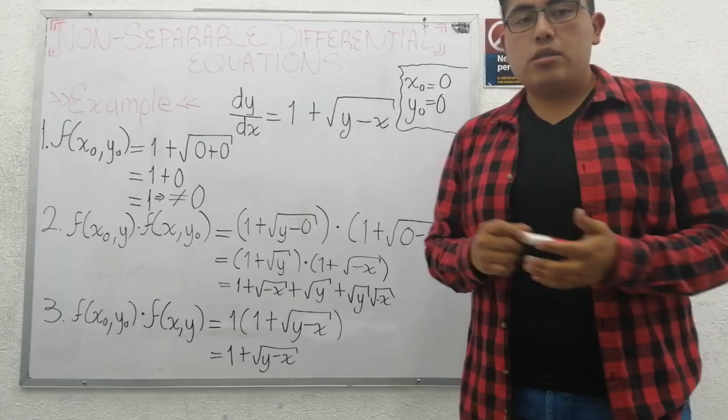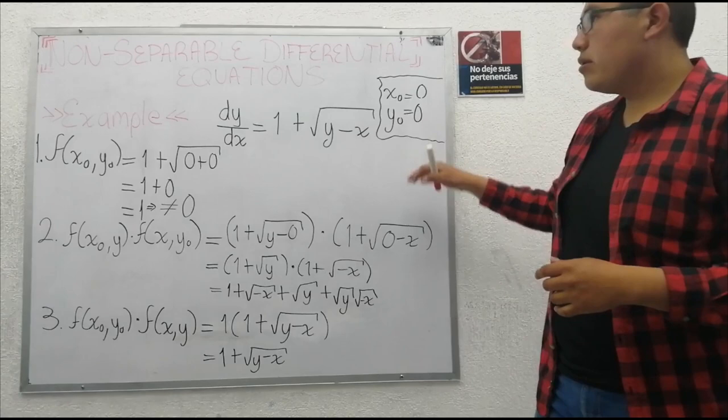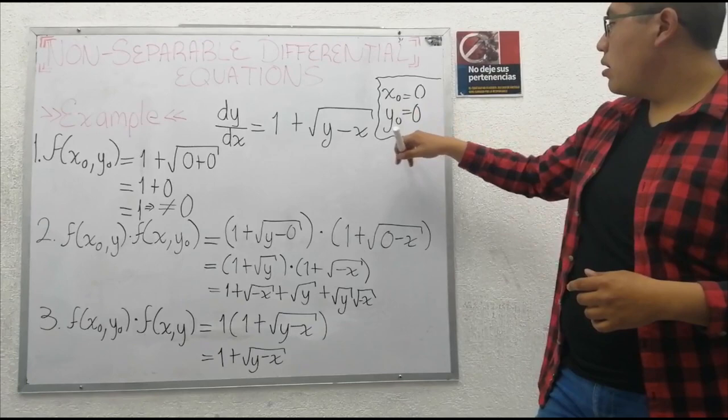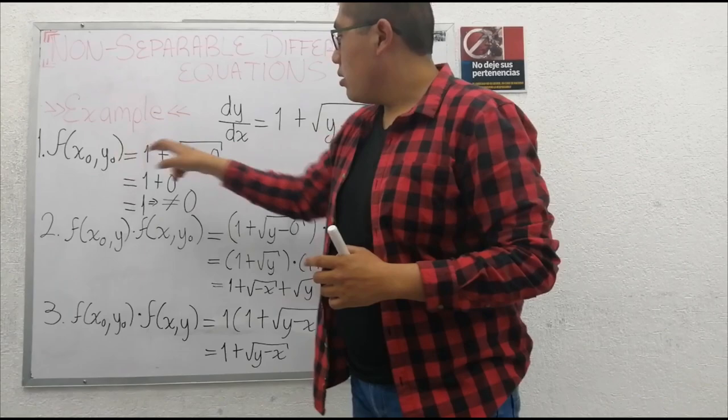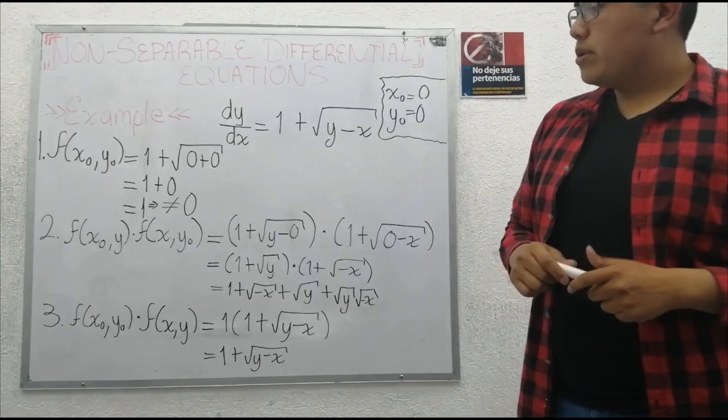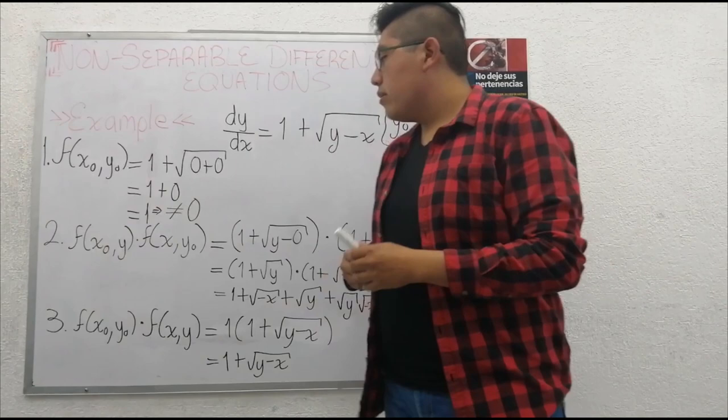We find values where the equation function is not zero. In this case, there are x sub zero equals zero and y sub zero equals zero because the function at these points is one. Number two, calculate the functions depending on x sub zero and y times the function depending on x and y sub zero.